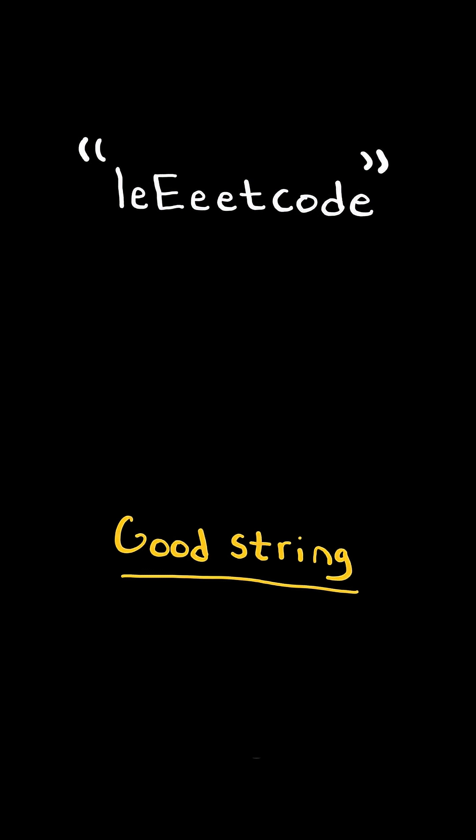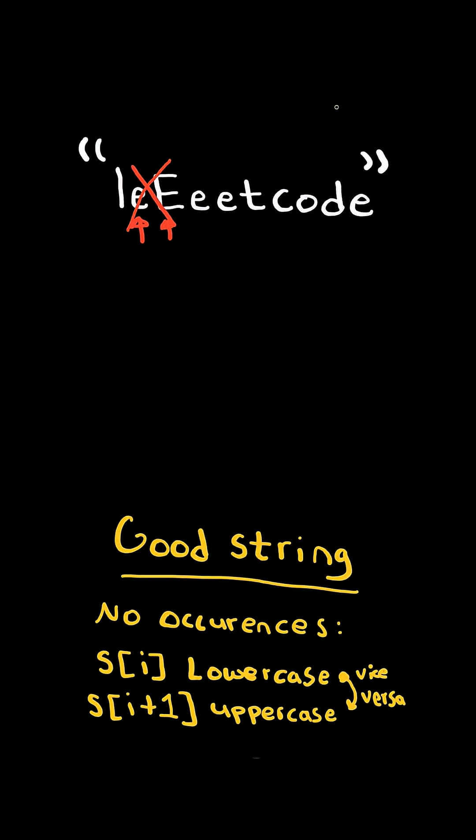Make the string great. A good string is defined as a string with no occurrences of s[i] being lowercase and s[i+1] being the same letter but uppercase or vice versa. Remove all occurrences where this exists and return the result.